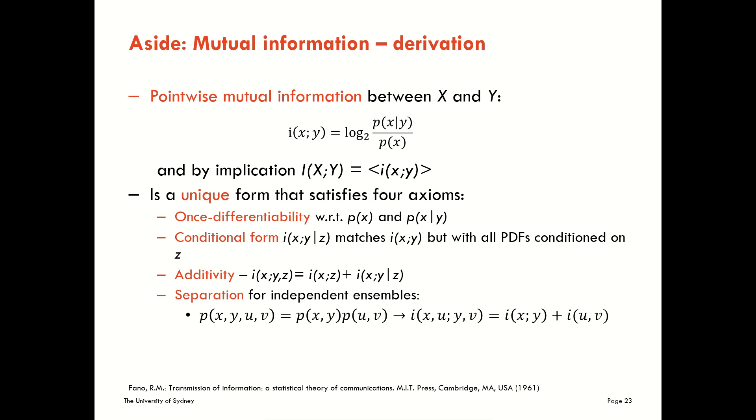So Fano derives the pointwise mutual information as the unique form that satisfies four particular axioms. It satisfies differentiability across these probability functions. It satisfies that the conditional form matches the unconditioned form, but simply with the probability distribution functions conditioned on Z. It satisfies a chain rule or additivity, as we just looked at, which was a very important property for us to consider. And it satisfies a separation for independent ensembles here.